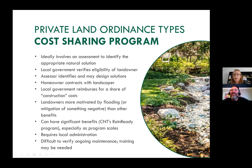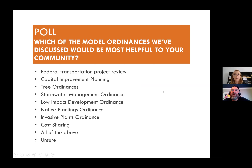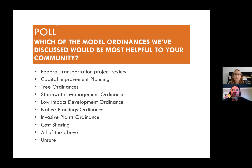Moving into overarching polls reflecting on all the ordinances discussed. We did the tree poll — results showed 'all of the above' was most popular, with tree protection in second place. The follow-up polls asking which model ordinances discussed would be most helpful, provide greatest community benefit, and come with highest cost all showed 'all of the above' winning, with stormwater management ordinance consistently in second place for both helpfulness and greatest community benefit. For highest cost, capital improvement planning came in first, which resonates with experiences Drew and Anna have had in partnership with communities. Results show good alignment between community benefits and municipal priorities.